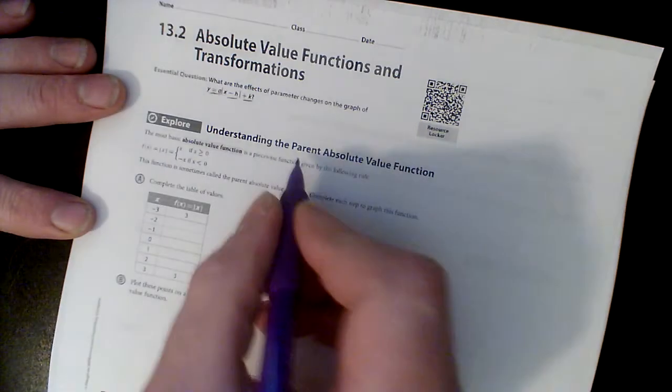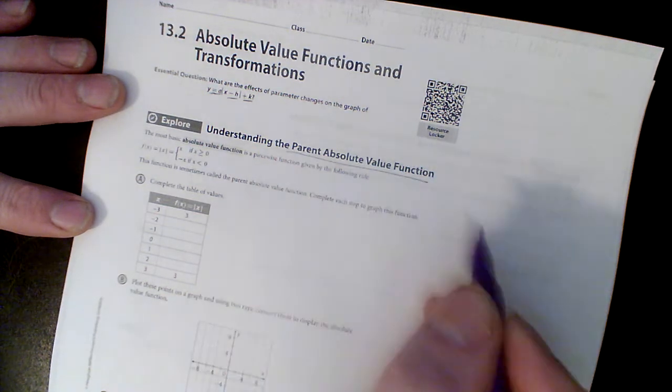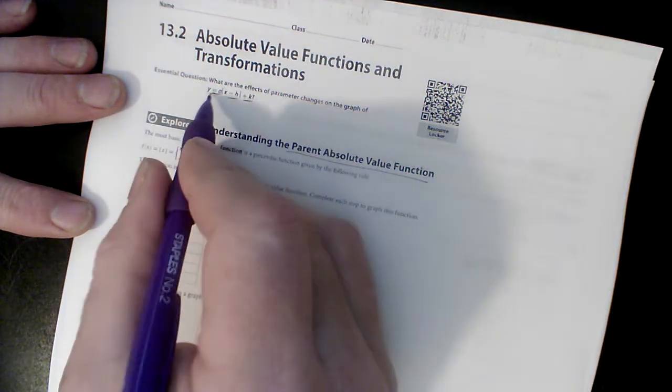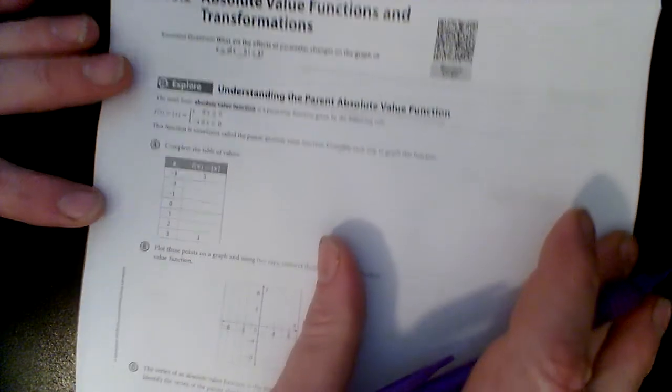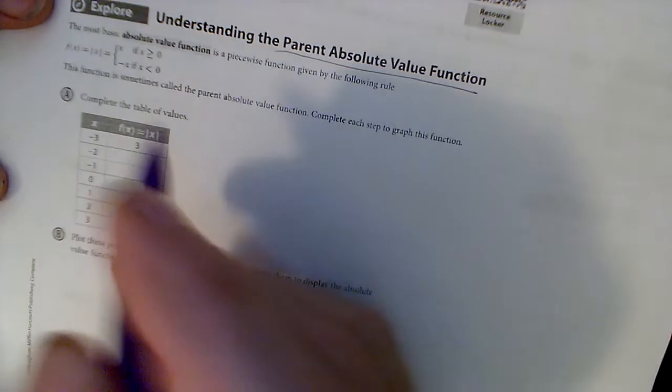Our goal is to first understand the parent function, parent function absolute value, and then start showing you a, h, and k. They're really not too bad after you've seen it a few times. So let's get through this once here.